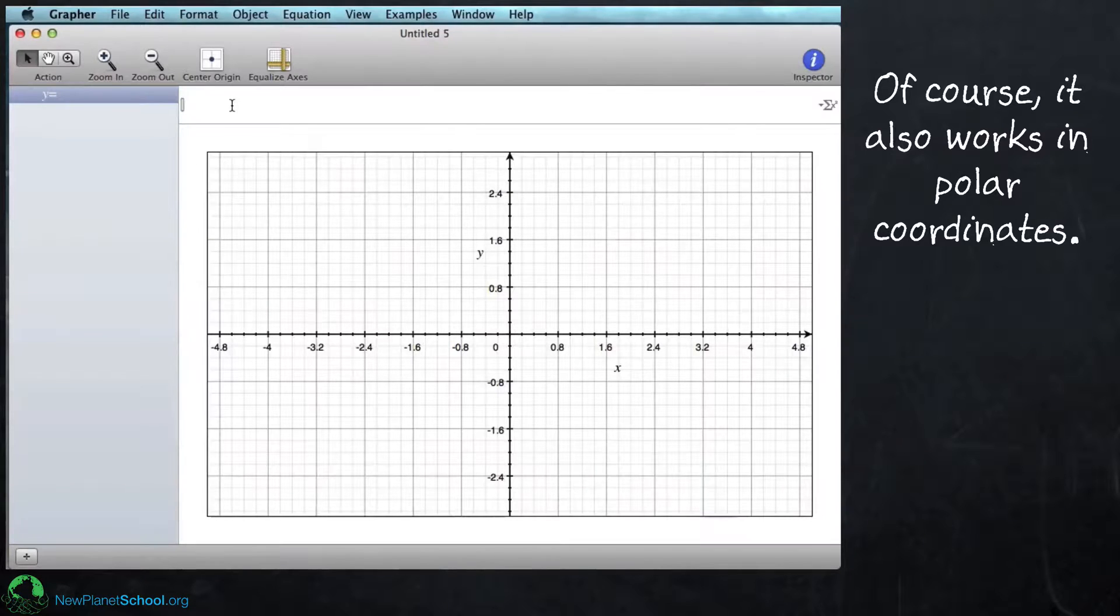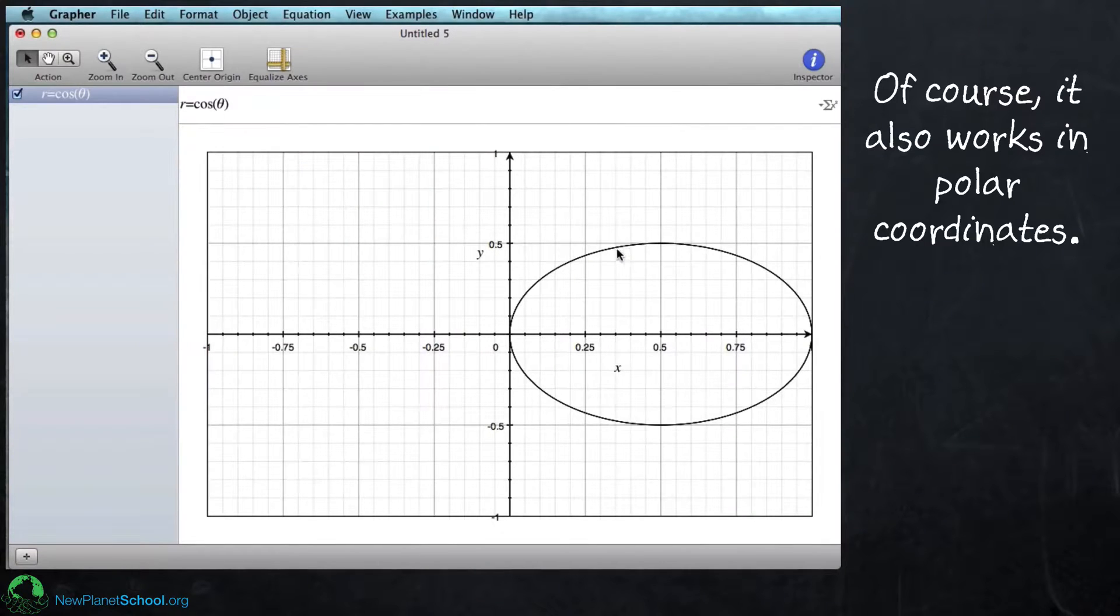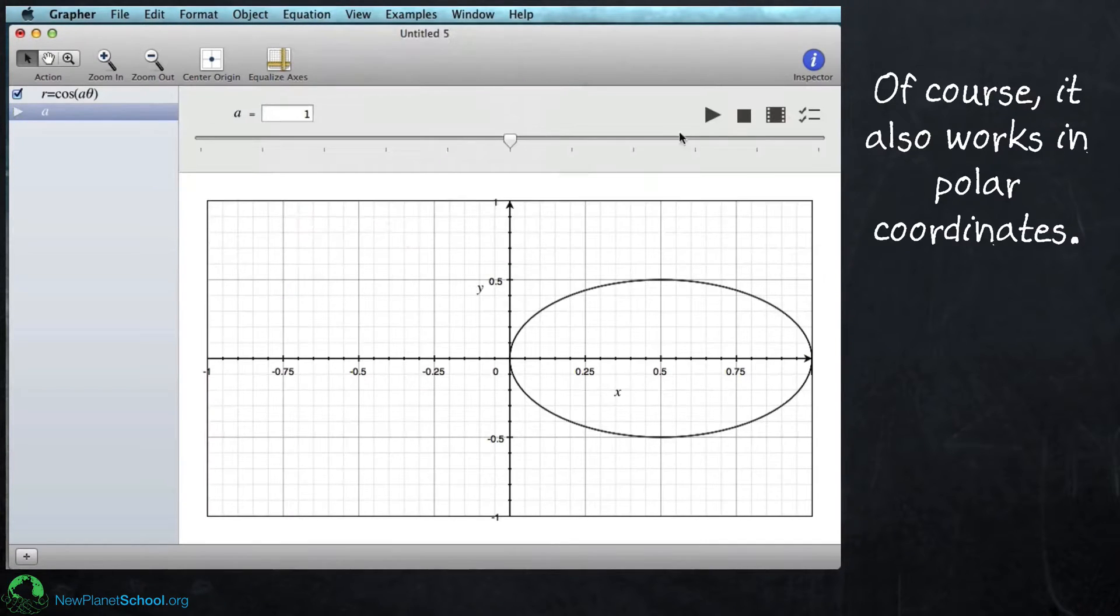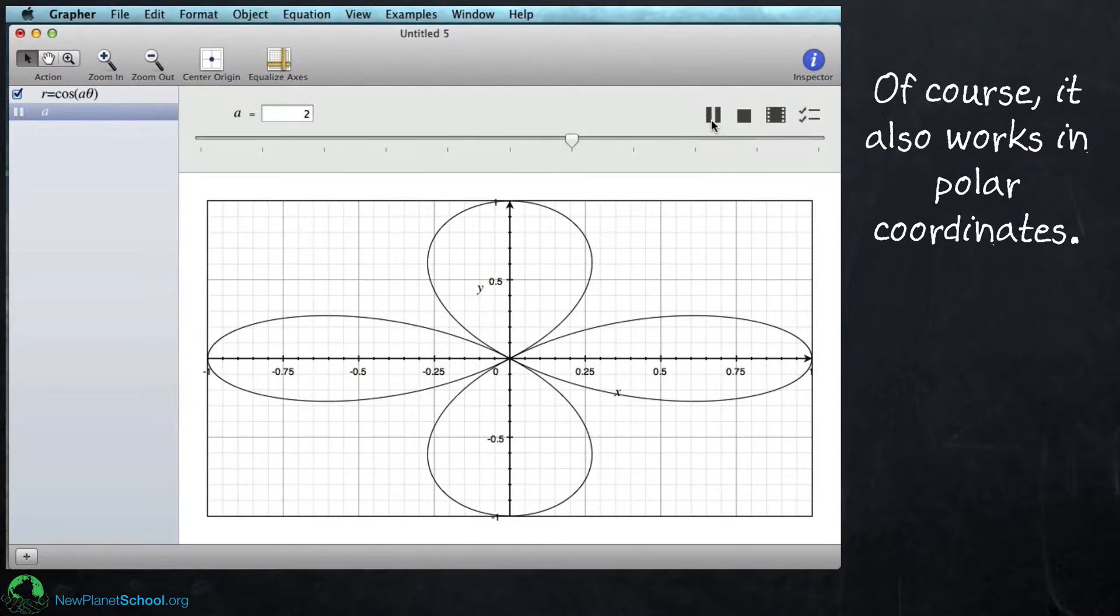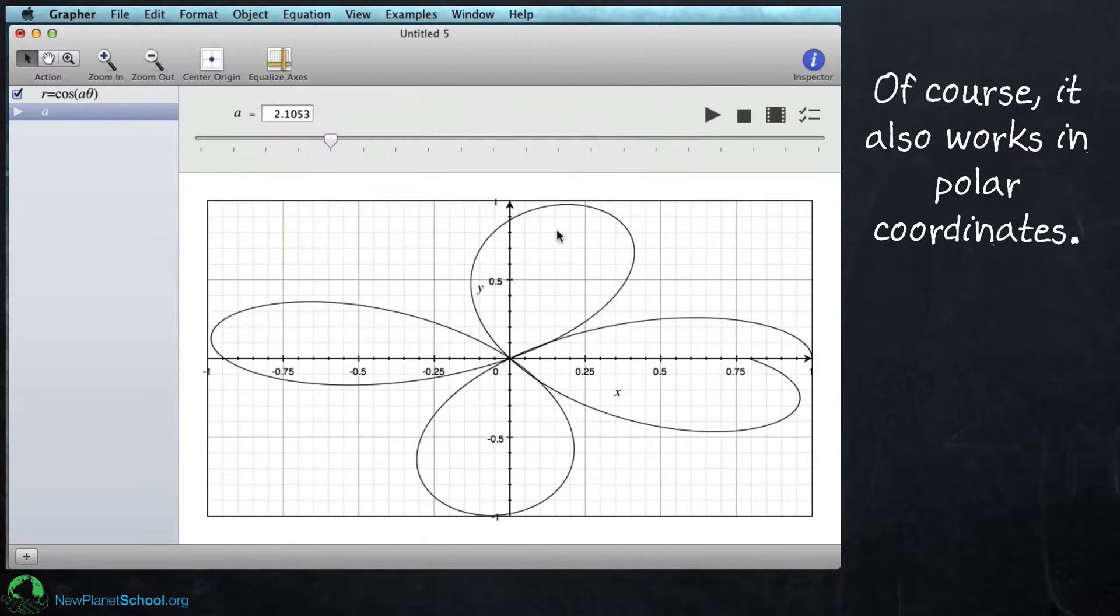Not surprising, in MacGrapher it works in other coordinate systems. So everything is basically the same. You type an equation in, and in this case I'm using r and theta instead of x and y. Add a parameter here. Same thing. Give it some value. Go under equation, animate parameter, press play. Everything's the same. You can set the minimum and maximum values. Nothing changes. Just a different coordinate system.